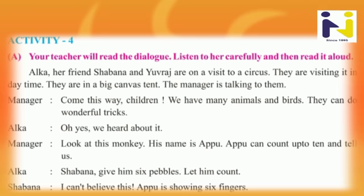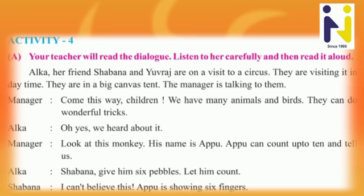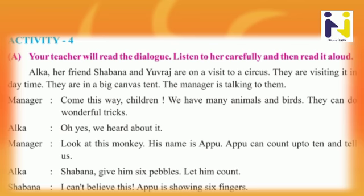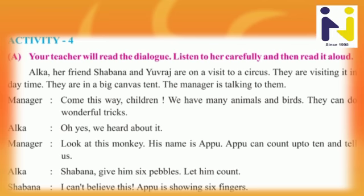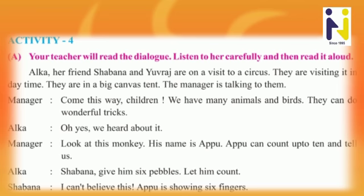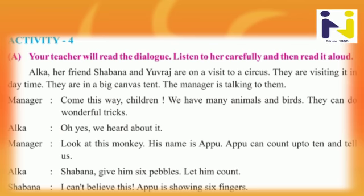Alka says: 'Oh yes, we heard about it.' — 'Haan, amne tena vishe sambhadyu chhe.' Manager says: 'Look at this monkey. His name is Appu. Appu can count up to 10 and tell us.' — 'Appu 10 sudhi gani ne aapanne kahi shake chhe.'